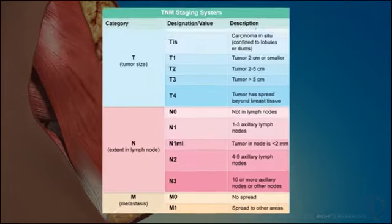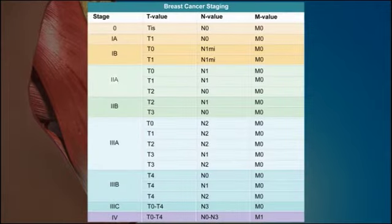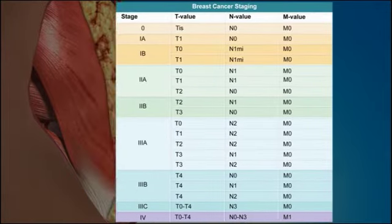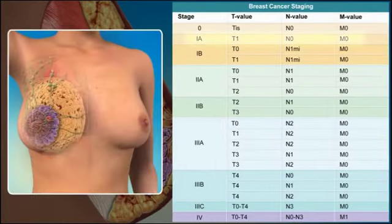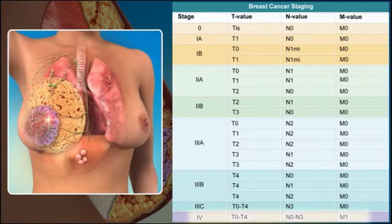The combination of TNM values are used to assign a stage from 0 to 4 to the cancer. For example, a stage 1 tumor might be a small tumor without lymph node involvement that is confined to the breast, whereas stage 4 is aggressive metastatic breast cancer that has spread to other areas of the body.